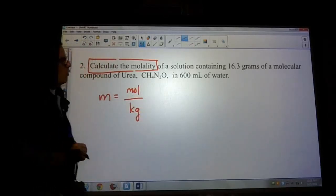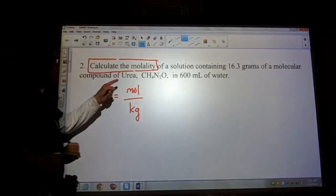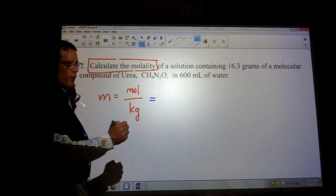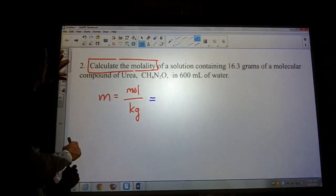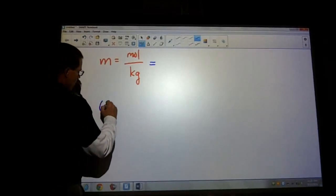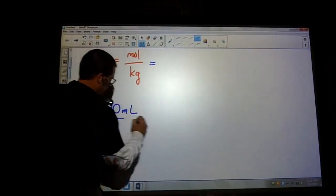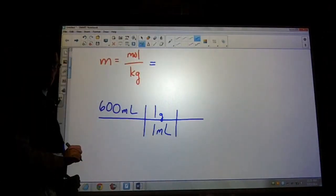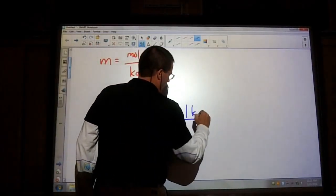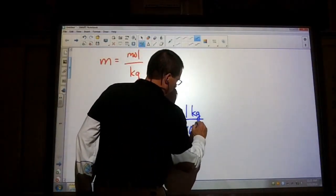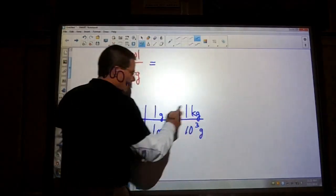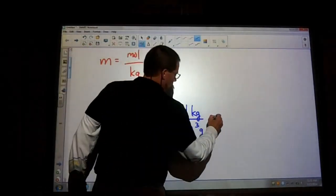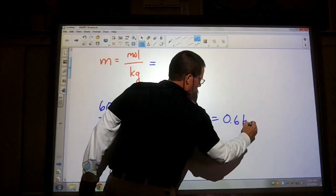In this question here, we have 16 grams of our compound and we have 600 milliliters of water. So converting the milliliters into kilograms should be the easy part here. Remember that when you have your milliliters of water, one gram of water has a volume of one milliliter. Then to convert that into kilograms, remember that one kilogram is bigger than a thousand grams. So in that case here, that gives us a 0.6 kilogram solution.